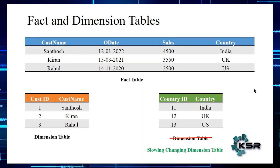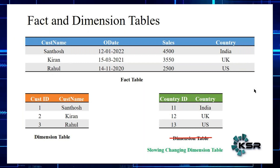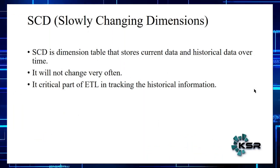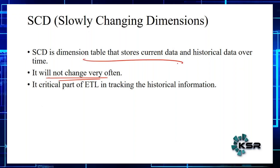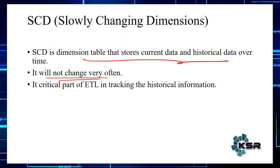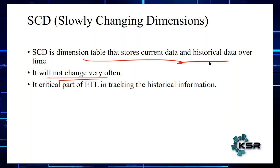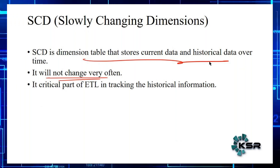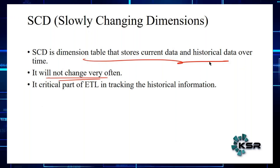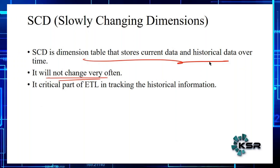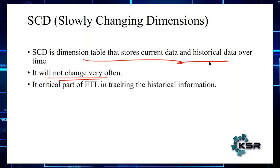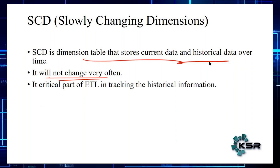Slowly Changing Dimension is a table that does not change very often — that is a very important thing to remember. Apart from that, it is also a table which stores both current data and historical data. This is a very important terminology whether you are a data analyst, data engineer, or data scientist. This concept is asked in almost all interviews.